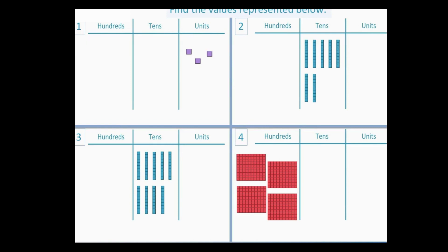Question number one: we have one, two, three units, which is 3. Question number two: one, two, three, four, five, six, and seven tens, which is 70.